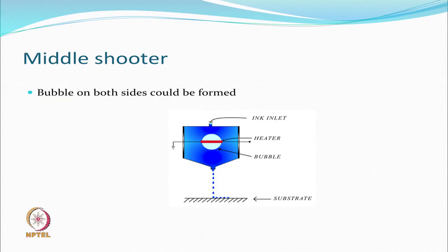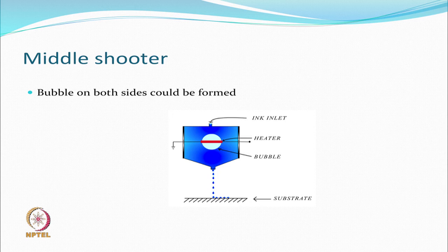Suspended heaters are also used — here the ink is present on both sides of the heater. You apply a field and suddenly there will be bubbles. The only control is voltage. This is interesting because you do not need a displacement transducer. Some companies use this concept and it is called thermal inkjet printing.